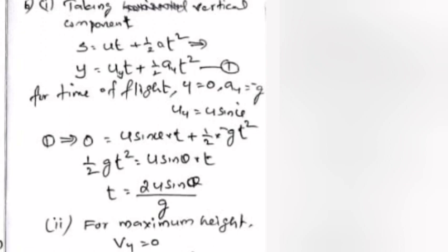This gives 0 equals u sin theta times t plus half times minus g times t squared. Half gt squared equals u sin theta times t. Therefore T equals 2u sin theta by g.